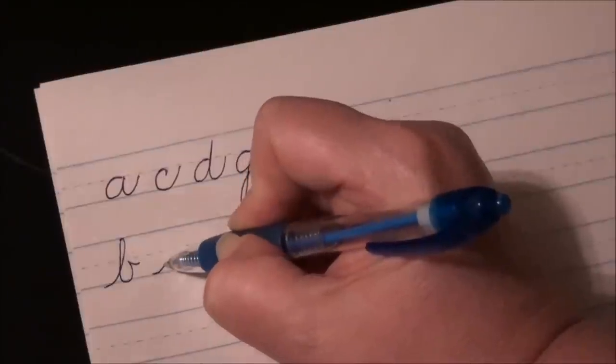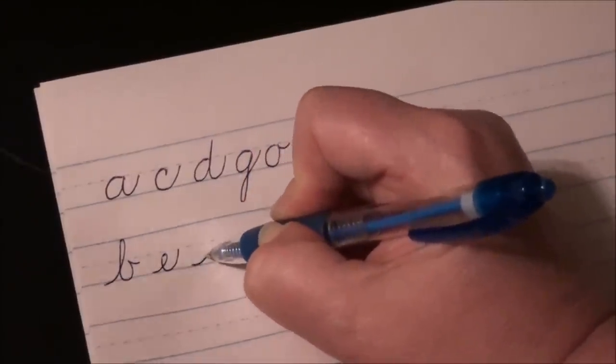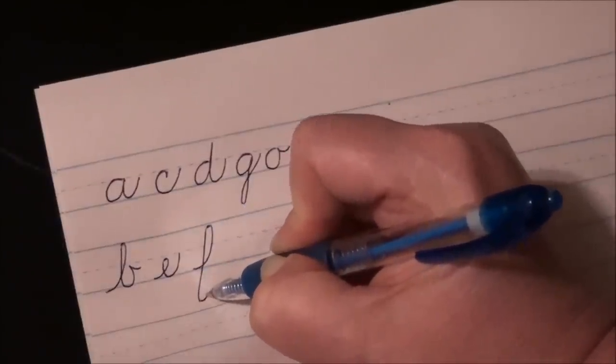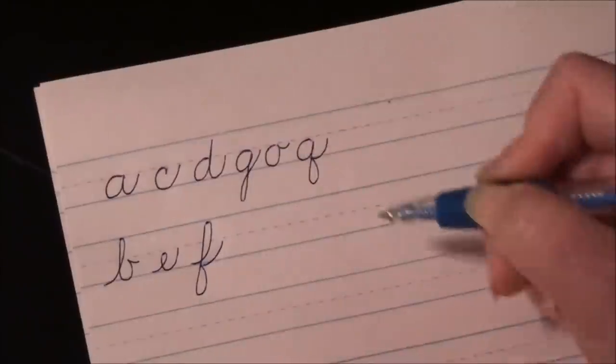E, just loop to your midline. F, loop to the headline, down past the baseline, loop to the right, bounce off, and come up for your tail to the midline.